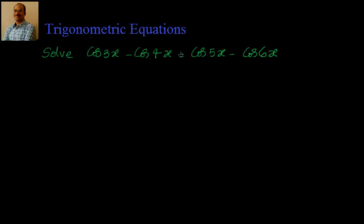From the first impression, if I look at the problem, I see that the coefficients of x are 3, 4, 5, and 6. So what I am trying to do is if I bring 6 to this side, it becomes 3 plus 6 and 5 plus 4. We can see that 3 plus 6 is 9 and 5 plus 4 is 9, so I can cancel out the 9 term.